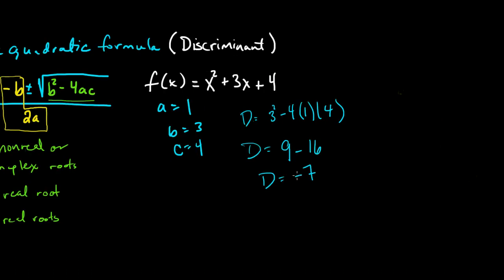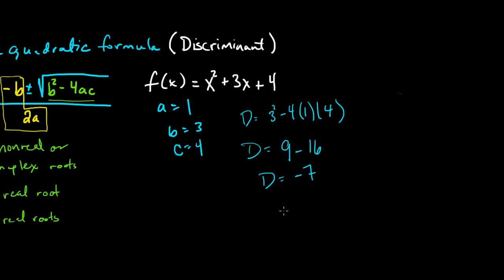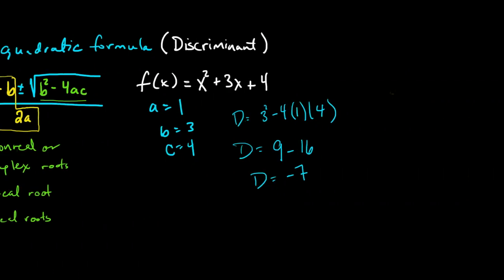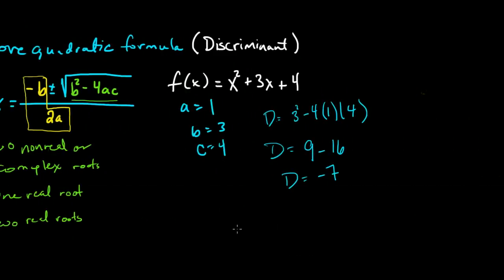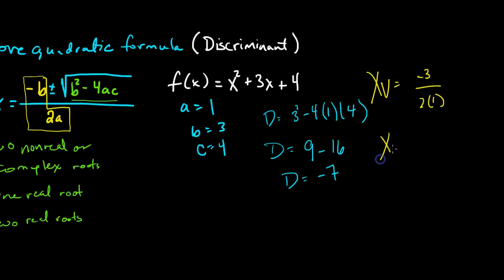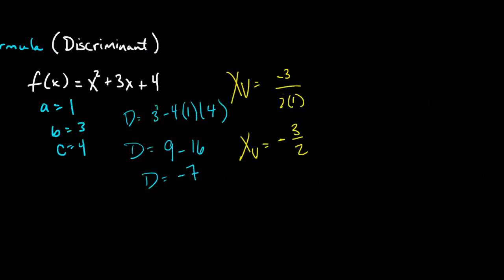4 times 4 is 16, so our discriminant tells us that the radicand is negative 7. Because the radicand is negative 7, that tells us that our parabola graphed from this function is not going to cross the x-axis. Let's double-check that by finding the vertex. Our vertex x-coordinate is negative b over 2a, which is negative 3 over 2 times 1.